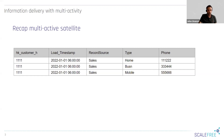In a standard satellite, the hash key and the load timestamp form the primary key. In a multi-active satellite, we need an additional attribute — in this case, the type code for phone numbers. If there's no natural multi-active attribute coming from the source, you have to add a subsequence number to make the primary key unique.